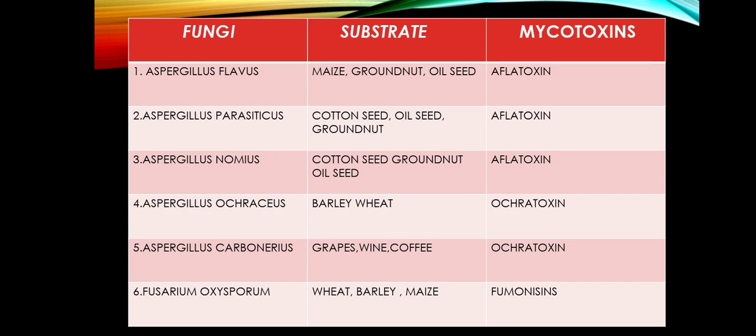List of fungi with their substrate and mycotoxins: (1) Aspergillus flavus — substrate: maize, groundnut, oilseed — mycotoxin: Aflatoxin. (2) Aspergillus parasiticus — substrate: cottonseed, oilseed, groundnut — mycotoxin: Aflatoxin. (3) Aspergillus nomius — substrate: cottonseed, groundnut, oilseed — mycotoxin: Aflatoxin. (4) Aspergillus ochraceus — substrate: barley, wheat — mycotoxin: Ochratoxin. (5) Aspergillus carbonarius — substrate: grapes, wine, coffee — mycotoxin: Ochratoxin. (6) Fusarium oxysporum — substrate: wheat, barley, maize — mycotoxin: Fumonisin.